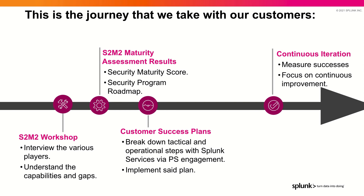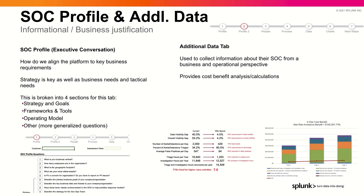Let's talk quickly about what to expect in the different sections. We'll start off with an executive-level conversation on how we align the platform to key business requirements — strategy is super key in this part. Then the next section is where we collect some additional information from the SOC from a more business and operational perspective, so that we can help provide you with that cost-benefit type of analysis in terms of incorporating risk, automation, and all of these things together within security operations.